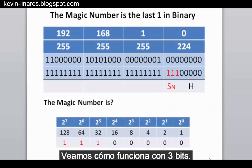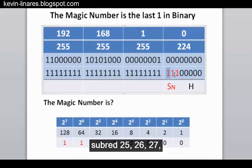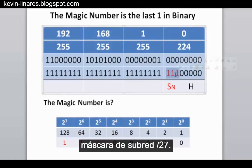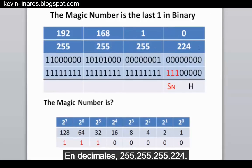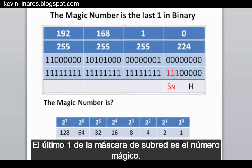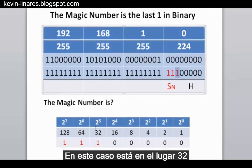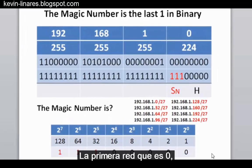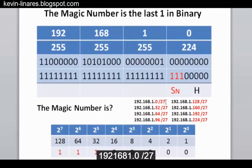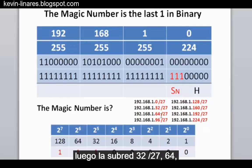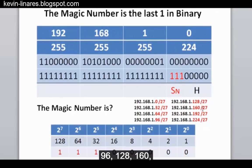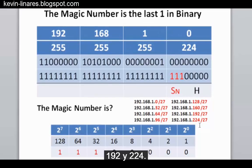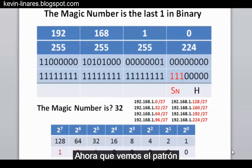With 3 bits borrowed we have a slash 27 subnet mask, 255.255.255.224 in decimal. The last one in the subnet mask is in the 32s place, so the magic number is 32. The networks go up by 32: starting from 192.168.1.0 slash 27, then the 32 subnet, 64, 96, 128, 160, 192, and 224. The subnets go up in increments of 32, following the magic number.